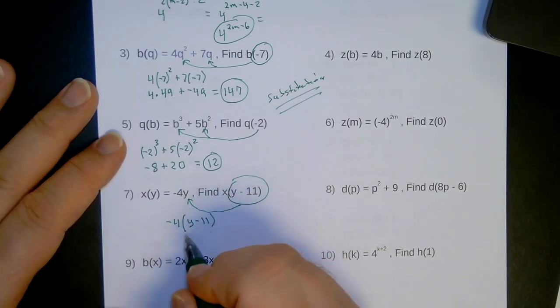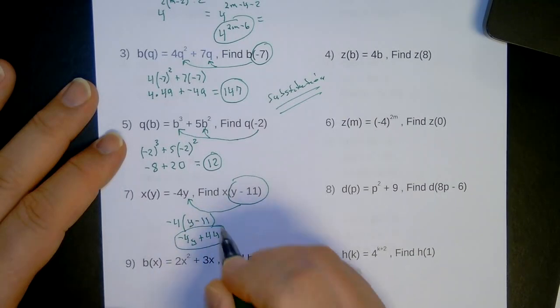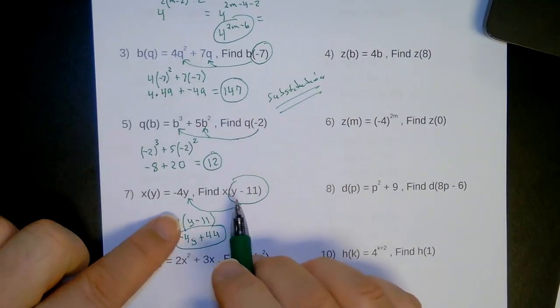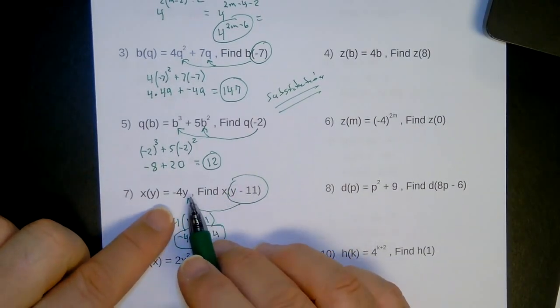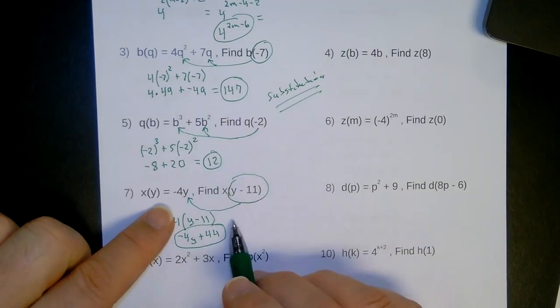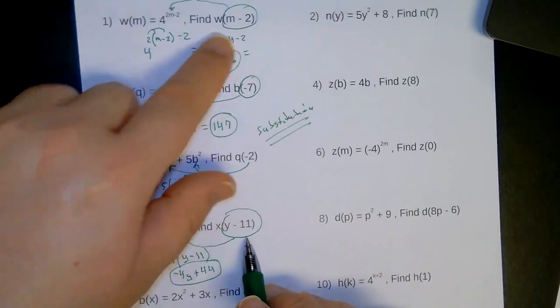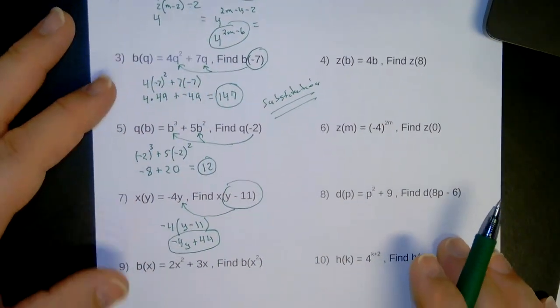Now all I have to do is distribute then. So negative 4y, a negative times a negative is positive 44. All done. Again, notice I had to substitute all of this in for y. Whereas number 5, it was just negative 2. Here is y minus 11. This is very similar to what we had to do back up here in number 1. Same thing.